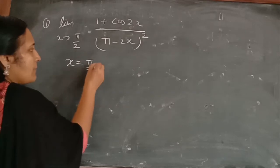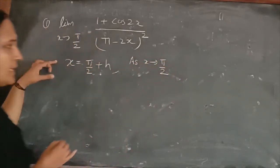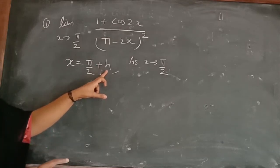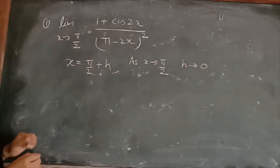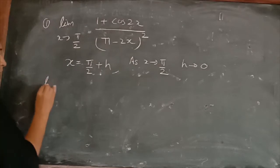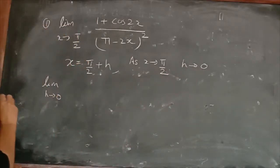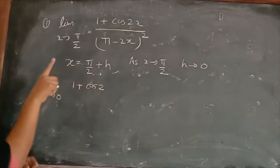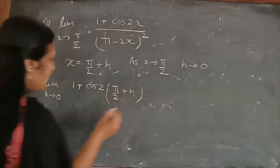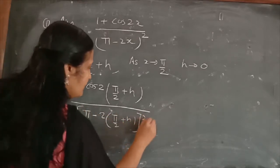We will take x = π/2 + h. As x tends to π/2, h will tend to 0. Now in the given question, in place of x we substitute π/2 + h everywhere. So the limit becomes: limit h tends to 0 of (1 + cos 2(π/2 + h)) / (π − 2(π/2 + h))².